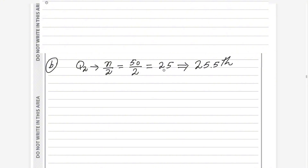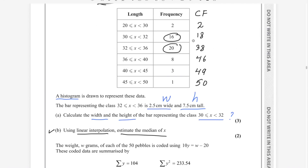Because you are estimating, the mark scheme accepts 25 as well, but using 25.5 is the correct approach. Whenever you get a whole number, add 0.5; if you get a decimal, round up to the next number. So the 25.5th value will be the median. Looking at the cumulative frequencies table, the 25.5th value lies in the class 32 to 36, since there are 18 values before it and 38 values up to and including it.